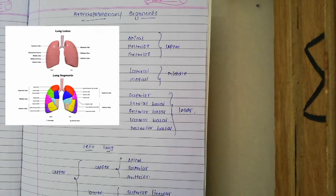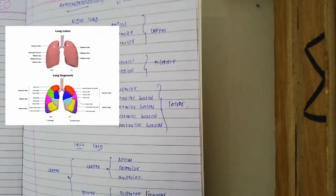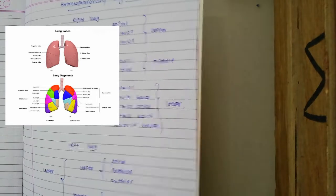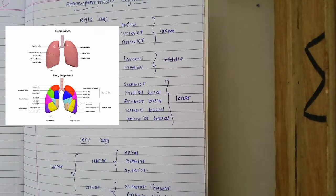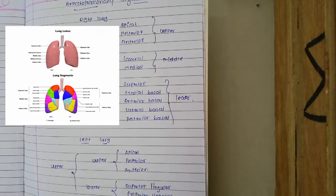They are supplied by the tertiary or segmental bronchus. Each bronchopulmonary segment has a segmental bronchus, segmental artery, and lymph and nerve plexus.